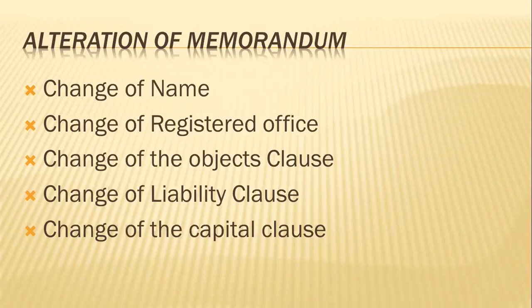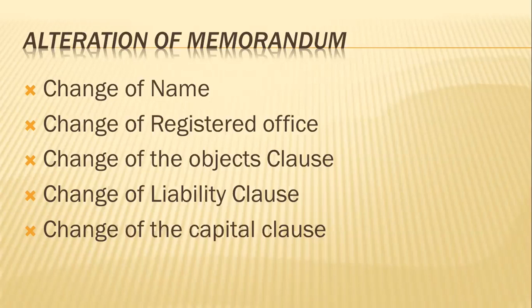Change of object clause: Section 17 of the act only gives a limited right to the company to alter its object clause. This section provides that the object clause can be altered only if the change enables the company to carry on its business more economically or more efficiently; to attain its main objective by new or improved means; to enlarge or change the local area of its operations; to carry on some business which under existing circumstances may be conveniently or advantageously combined with the business of the company; to restrict or abandon any of the objects specified in the memorandum; to sell or dispose of the whole or any part of the undertaking of the company; or to amalgamate with any other company or body of persons.